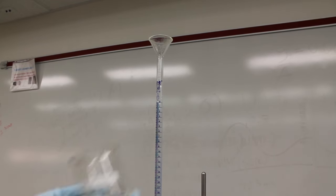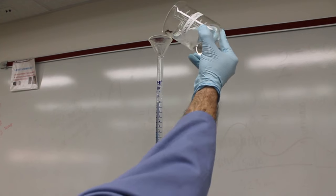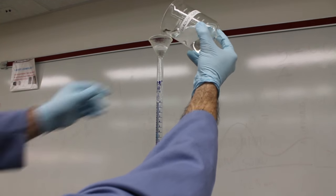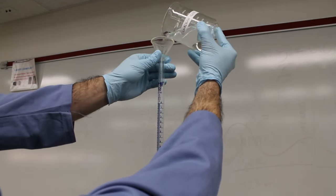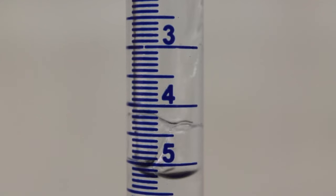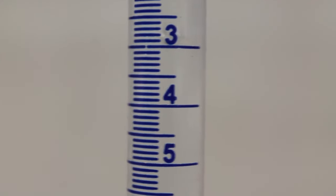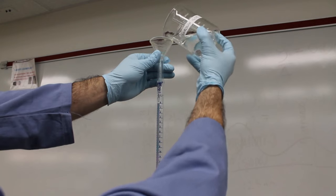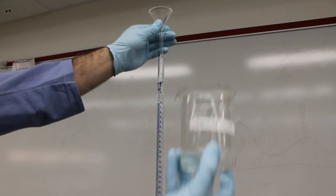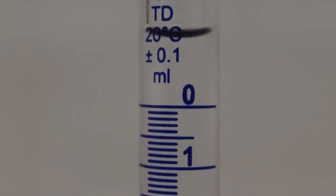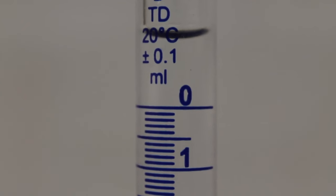Once you are fully rinsed, you can top off your burette with your titrant. Then you'll need to zero out your burette to get ready for your titrations. Remember, your initial reading does not have to be zero, but will need to be documented for your future calculations.